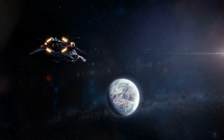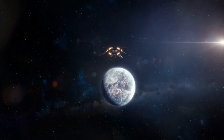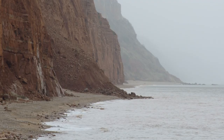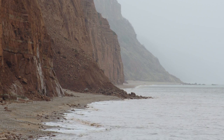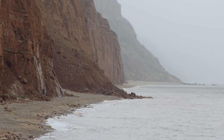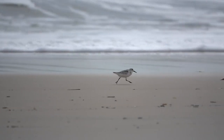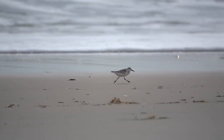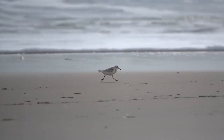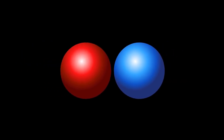As the star or object continues its approach, the gravitational forces acting upon it become progressively more formidable. These forces exert a powerful tidal effect, much like the gravitational forces exerted by the moon and the sun on Earth's oceans, causing tides to rise and fall. However, in the case of spaghettification, the tidal forces are on an entirely different scale. At a certain critical point in the object's descent, the gravitational forces on the side closest to the black hole become substantially stronger than those acting on the farther side.